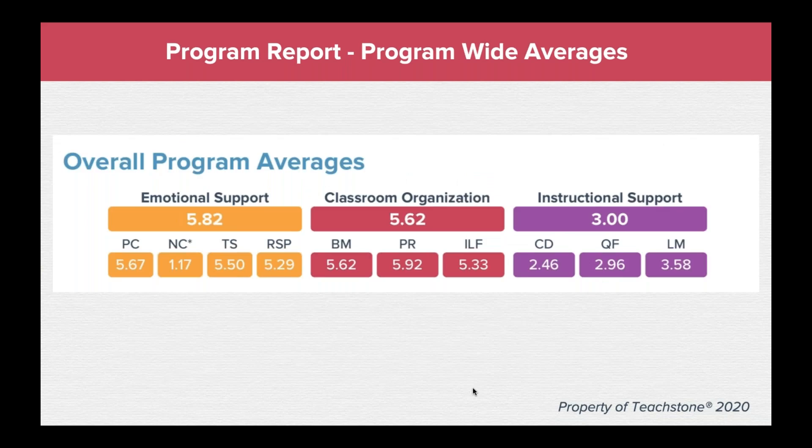For the program report, you're presenting similar types of information, but now for all observed classrooms in the program. Domain and dimension scores or ranges are important to include every time. A graphic showing the overall averages for each domain and each dimension lets you quickly see — language modeling is a little bit higher, positive climate is higher, productivity is higher — and then identify which ones are lower and where to focus professional development.